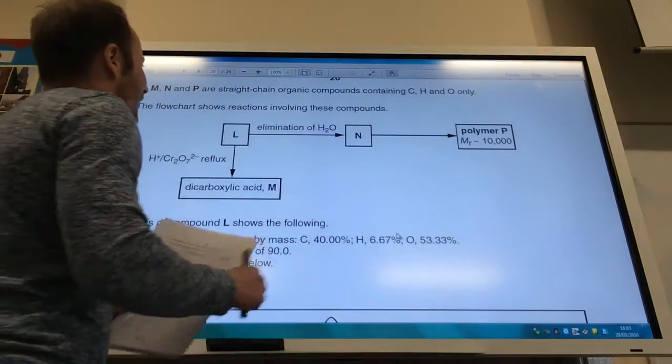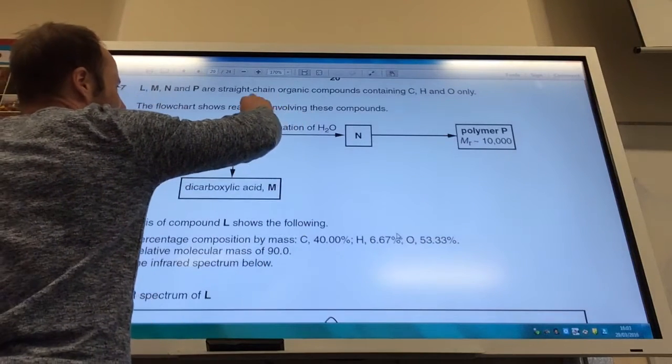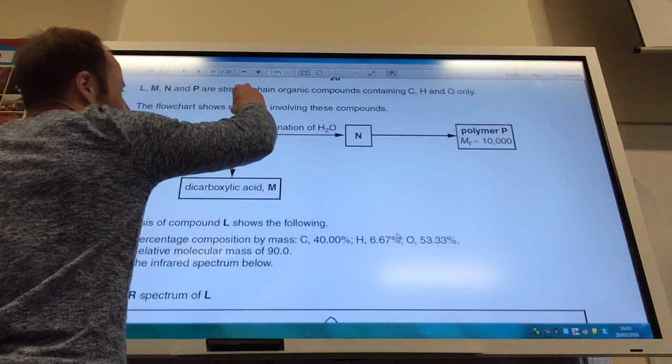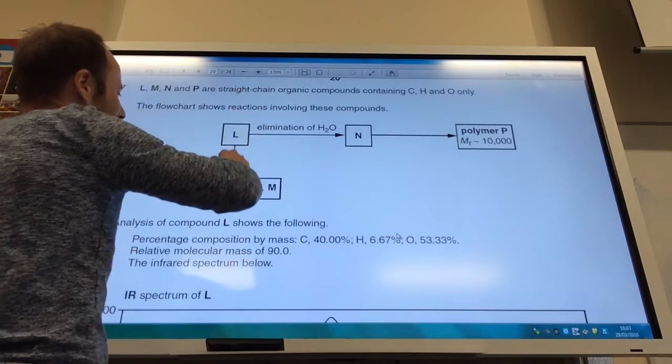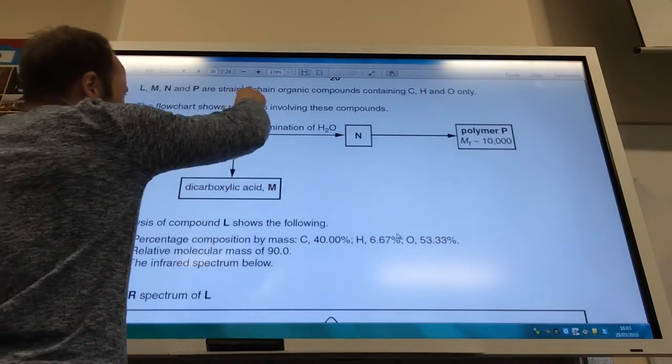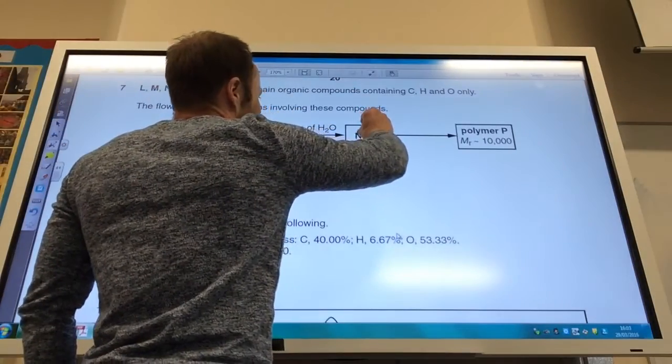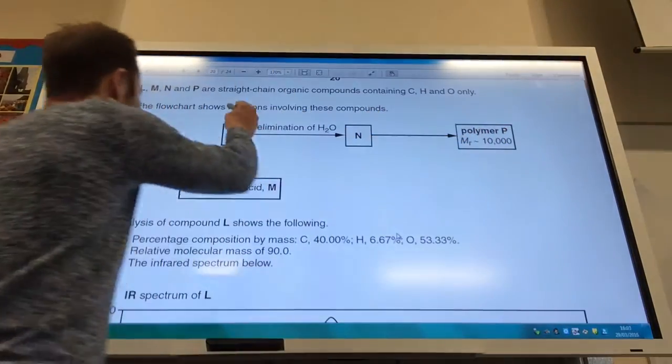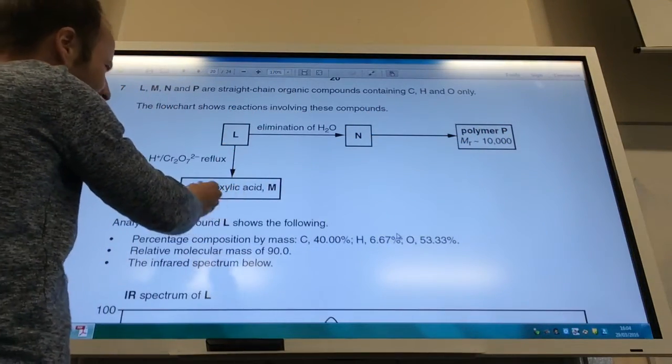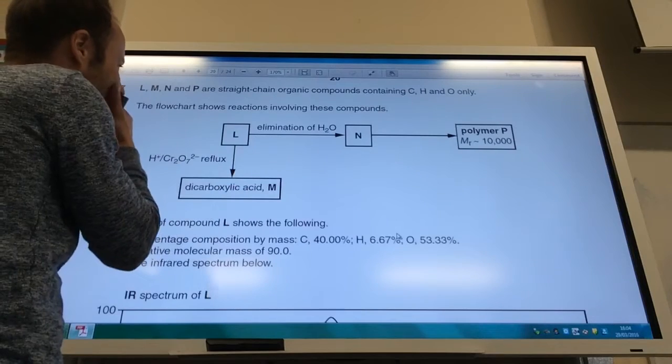I've eliminated water here. Elimination of water from L suggests that this is an alcohol, and that makes sense. I've got an alcohol group which I can eliminate to give me an alkene, and that gives me a polymer. And I've got a dicarboxylic acid here as well.